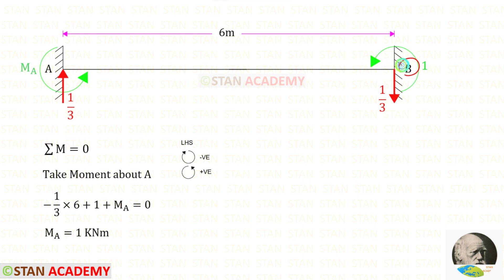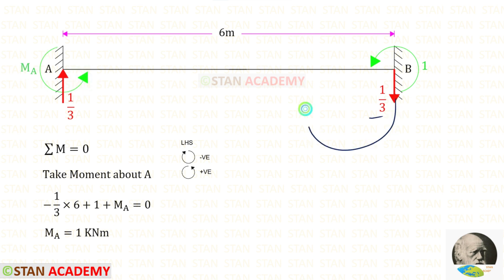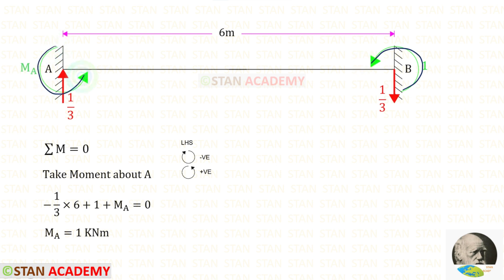Now, from point B let us take moments about A and find MA. Let us assume MA is acting in the anticlockwise direction. RB is acting in the clockwise direction so it will be negative with distance 6. Both MB and MA are acting in the anticlockwise direction so they are positive. Finally for MA we get a positive value, meaning our assumption is correct — it is acting in the anticlockwise direction.